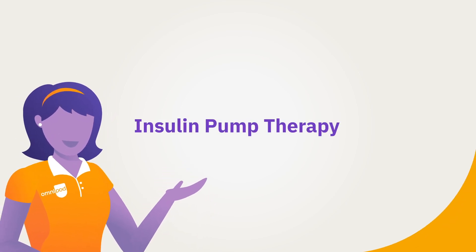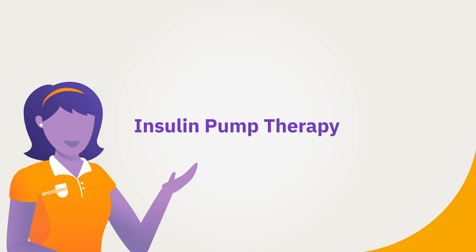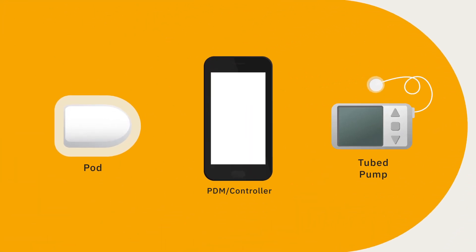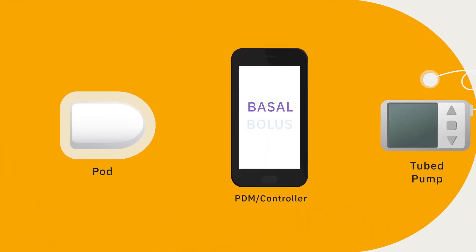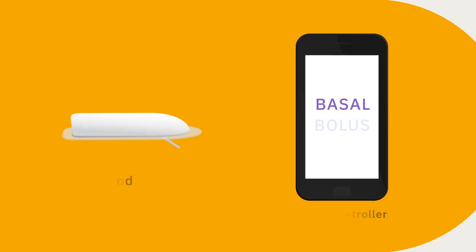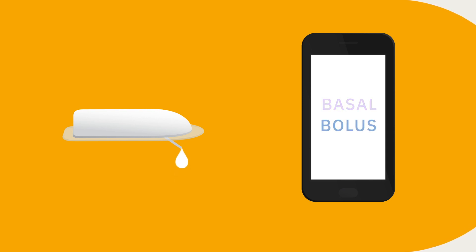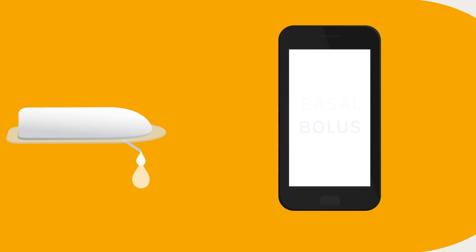Insulin Pump Therapy. Another way to deliver insulin is by using an insulin pump. Basal insulin is delivered continuously into a site on the body. In addition, when needed for a meal or correction, an insulin pump can be programmed to deliver bolus doses.